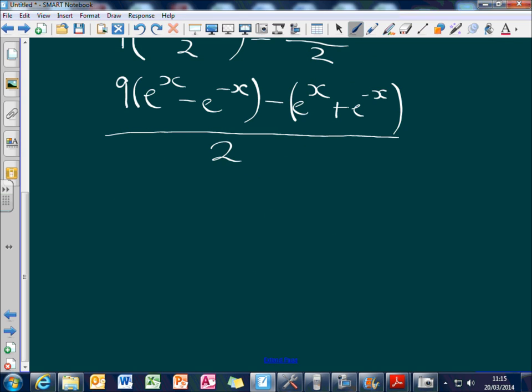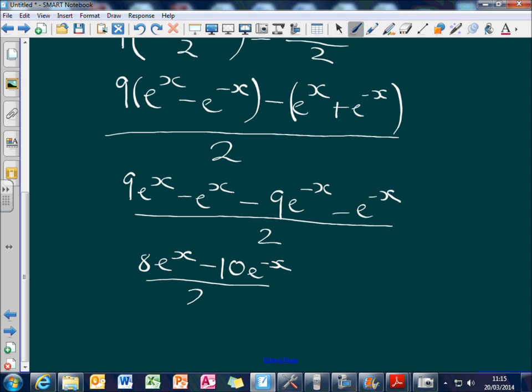And then basic maths, 9 e to the x minus e to the x minus 9 e to the minus x minus e to the minus x again all over 2 will give us 8 e to the x minus 10 e to the minus x all over 2, which equals 4 e to the x minus 5 e to the minus x, which is what we're after in the original question.